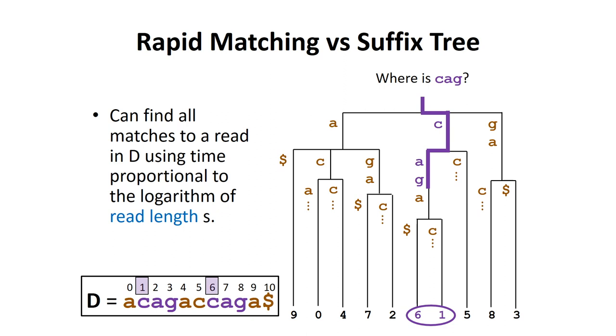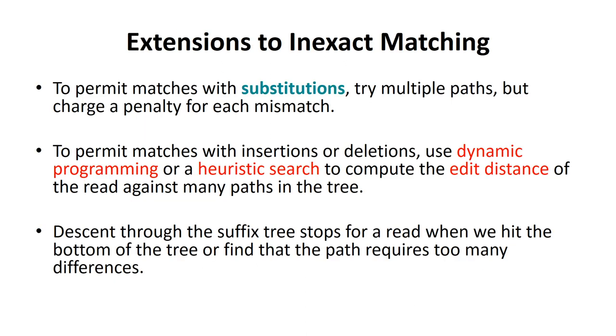We can modify the search algorithm to allow inexact matches. To allow base substitutions, we can follow multiple paths but charge a penalty for each mismatch. We can terminate the search within a subtree once the number of mismatches exceeds the maximum number of differences allowed. To facilitate inexact matches with insertions and deletions, we can use dynamic programming or a heuristic search to compute the edit distance of the read against many paths in the suffix tree.